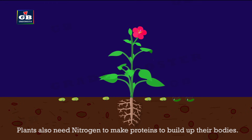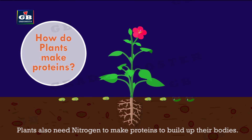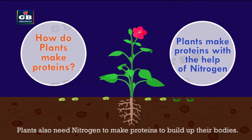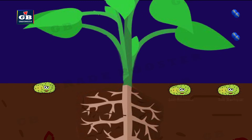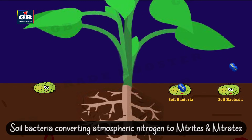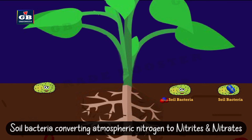We have seen how plants make carbohydrates like glucose, but how do plants make proteins? Plants make proteins with the help of nitrogen. Nitrogen is present in the air, and this atmospheric nitrogen gets converted to soil nitrites and nitrates by special bacteria called nitrogen-fixing bacteria. These soil nitrates and nitrites are then absorbed by the plants through their roots, and by using these, plants make proteins.